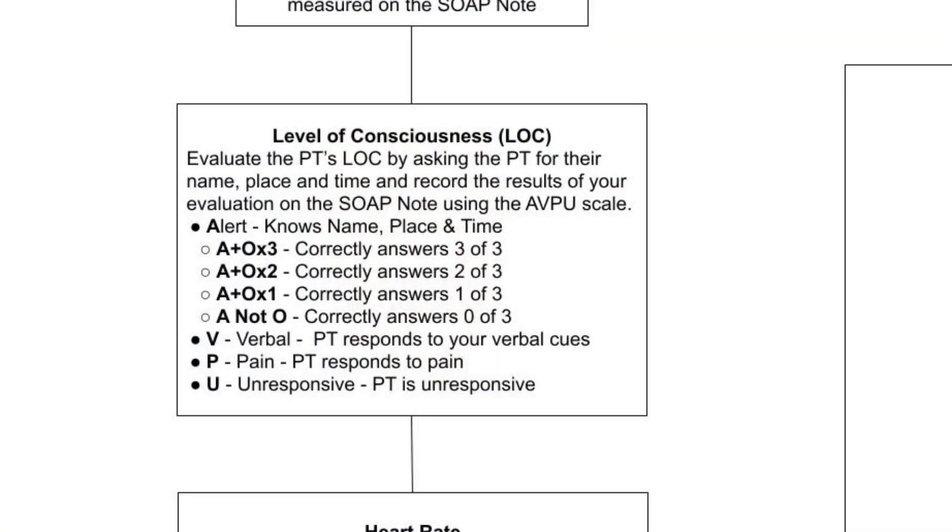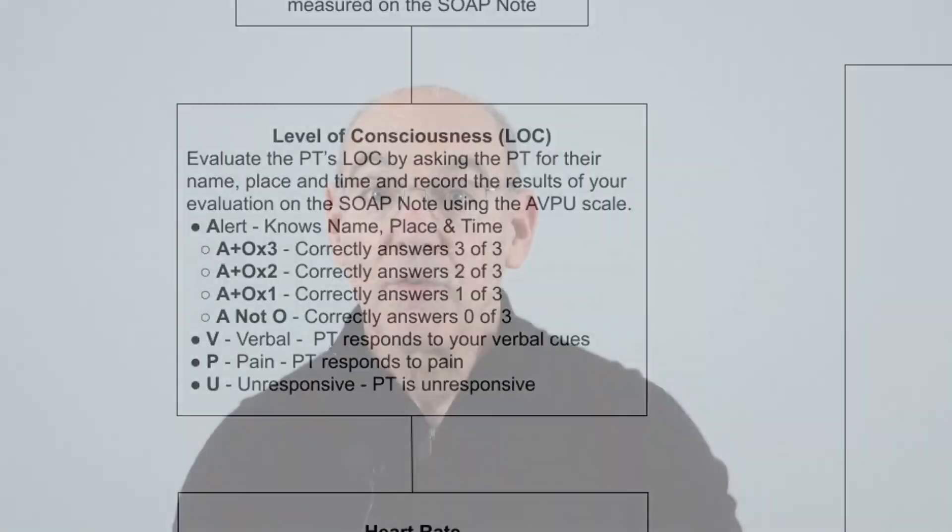A stands for Alert. The alert level is the ideal state, indicating that the patient is fully awake and aware of their surroundings. An alert individual can open their eyes, look at you, and respond coherently to questions or commands. This level suggests the patient's brain is functioning well enough to recognize and interact with their environment.